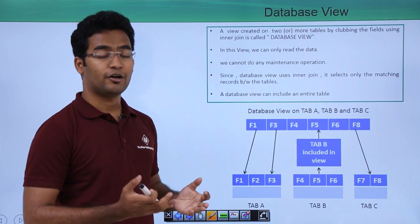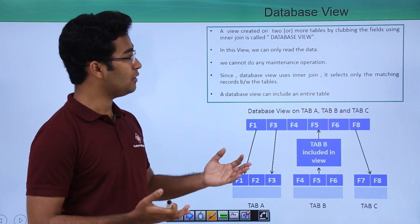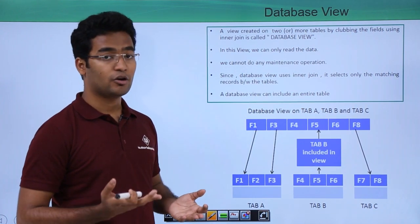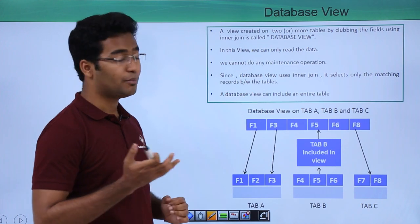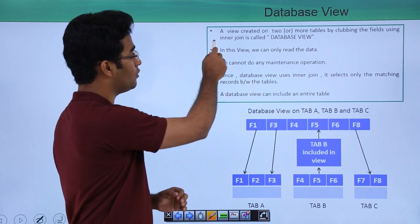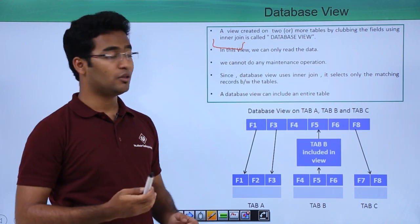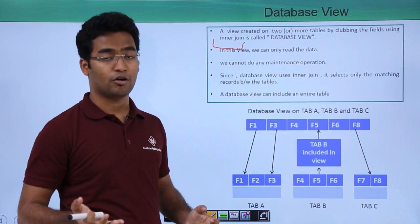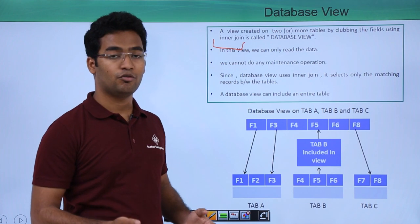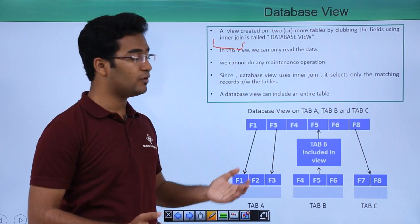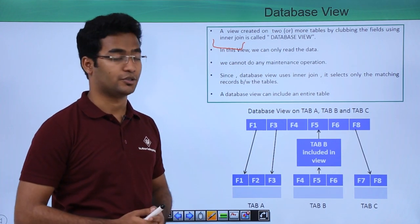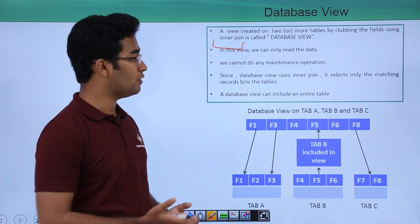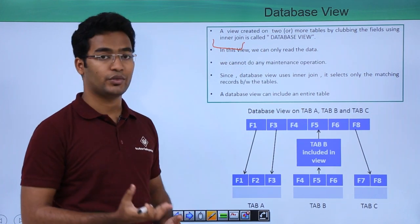A particular view that is created on two or more than two tables by clubbing the fields using inner join is called a database view. In this database view we are making use of inner joins. In this view we can only read the data and we cannot perform any maintenance operations. Since the database view is only using the inner join, it selects only matching records between the tables.